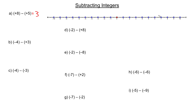We can use the number line again for example B. Negative 4 is what we're starting with. Taking 3 away, just like taking 5 away, means we go 1, 2, 3 in the negative direction. So we end up at negative 7.